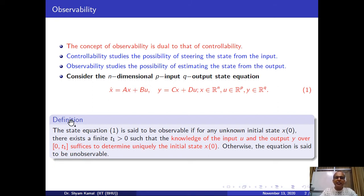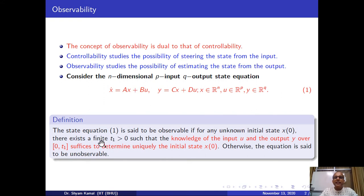The definition is: the state equation of a linear time-invariant system is said to be observable if, for any unknown initial state x₀, there exists a finite time t₁ > 0 such that knowledge of the input u and output y over that finite time interval is sufficient to determine uniquely the initial state x₀.